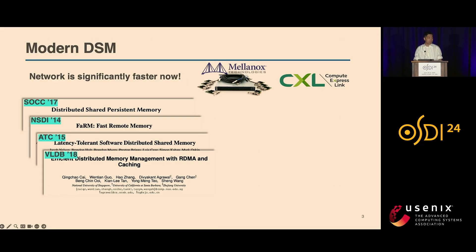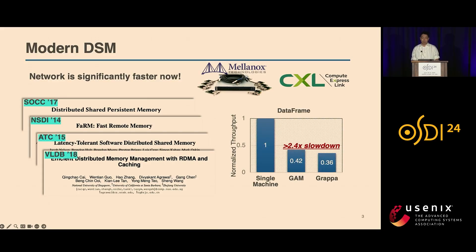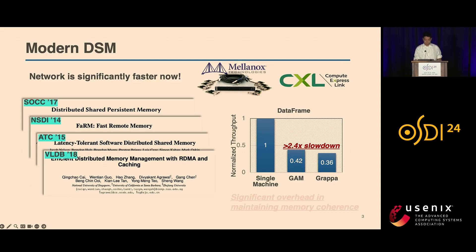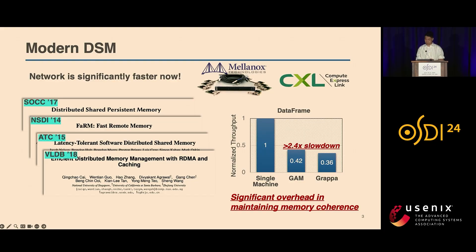But the performance is still unsatisfactory. As shown on the right, when running a typical data center application dataframe on a cluster of eight nodes using those DSMs, there is a big performance slowdown compared to running it on a single machine with equivalent resources. Our analysis shows that it is primarily due to the overhead of maintaining memory coherence.